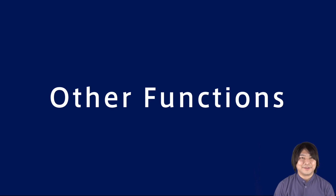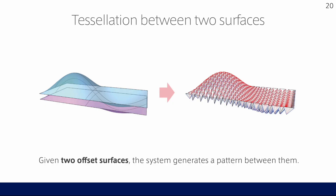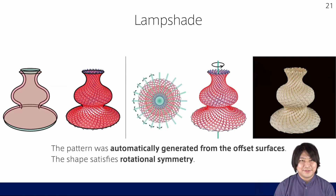Let's see other functions and applications of Crane. We have many other functions, so please refer to the paper for more detail. First, the system can also automatically assign the tessellation pattern. When the user gives two offset surfaces, the system generates a pattern between them. With this surface-filling tessellation, we can for example design a complex lampshade. This shape also satisfies rotational symmetry.